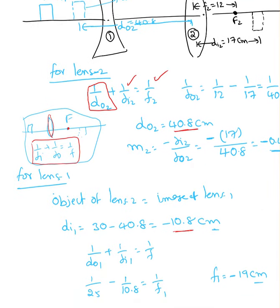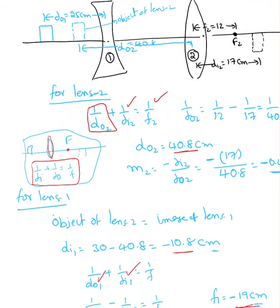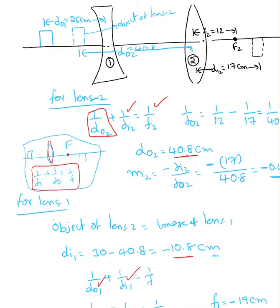Based on this, I know distance of object 1 and image 1, so I end up with the focal length which is negative 19 cm. f1 is somewhere here, 19 cm. Since negative, that means it's in front of the lens; if it is positive, that's behind the lens.